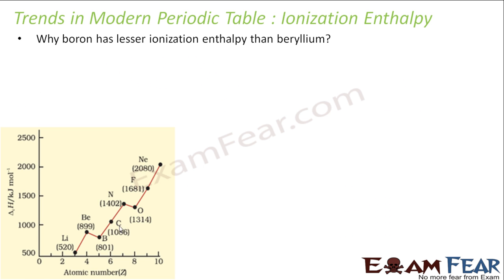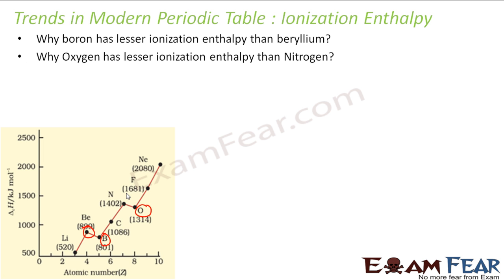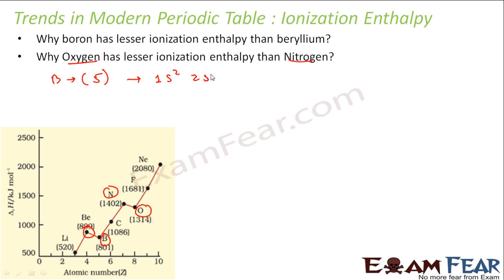So, boron has lesser ionization enthalpy than beryllium. Also, oxygen has lesser ionization enthalpy than nitrogen. The question is why? Let us see the electronic configuration of these elements. Let us start with boron. Boron has atomic number 5, so the configuration is 1s2, 2s2, 2p1. Beryllium has atomic number 4, configuration 1s2, 2s2.